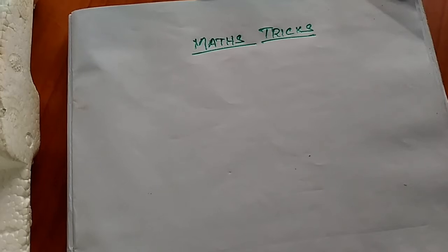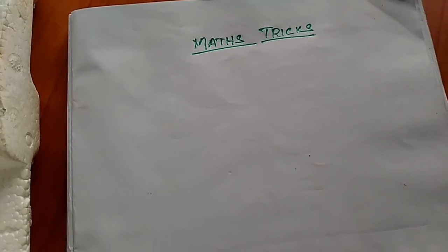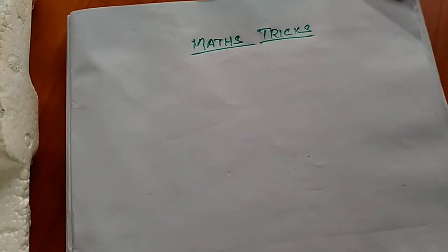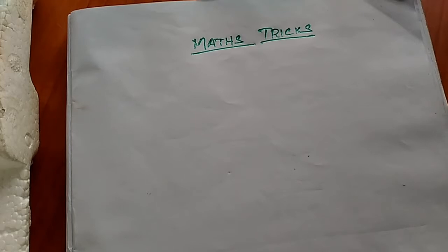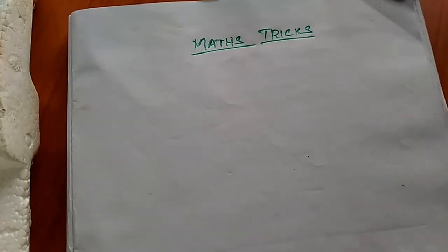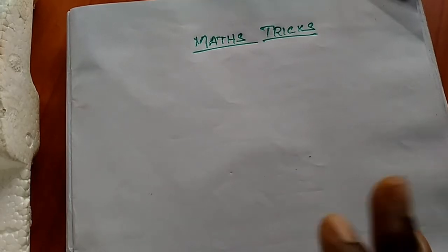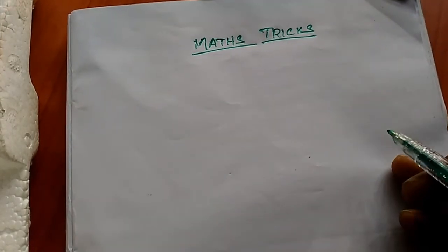Hello, welcome everyone to our math tutorial. In this video I'm going to show you how to multiply a three-digit number and a four-digit number. In the previous session I taught you how to multiply a two-digit number with a three-digit number. Now we see how to multiply a three-digit number with that arrow rule.